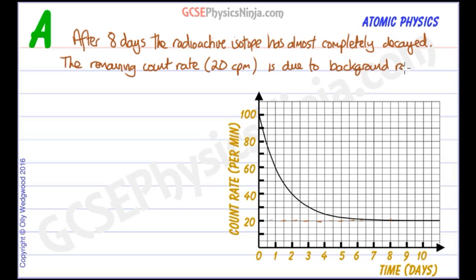The remaining count rate of 20 counts per minute is due to background radiation. That could be from sources such as rocks, from cosmic radiation, even from inside our bodies. There is a constant background radiation count.